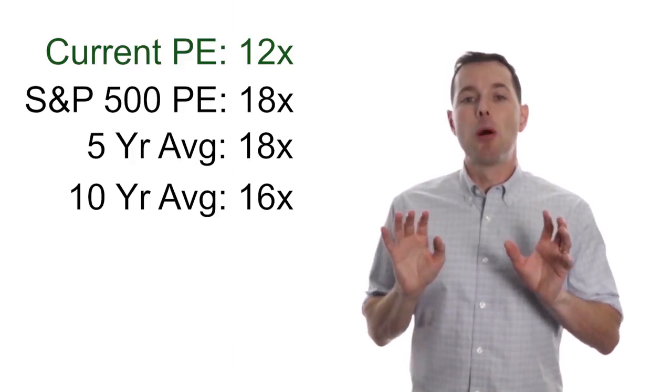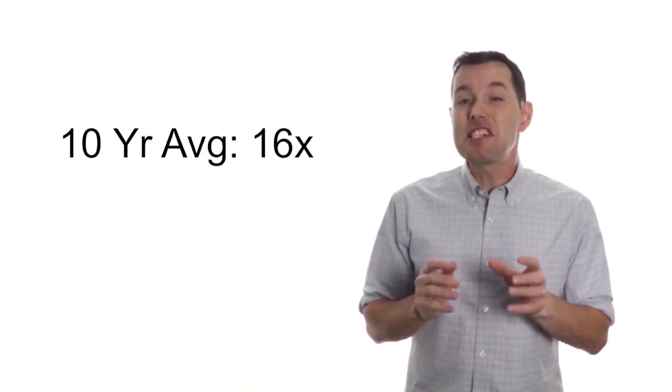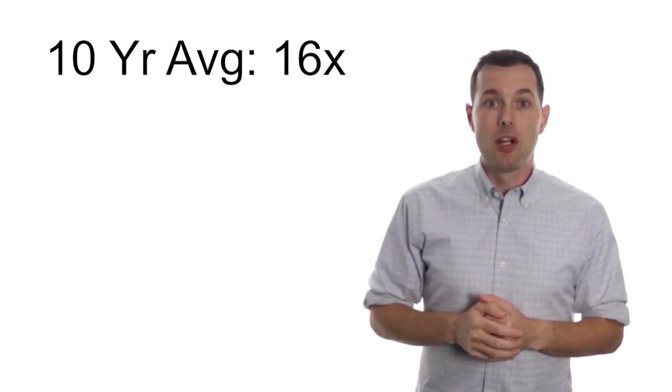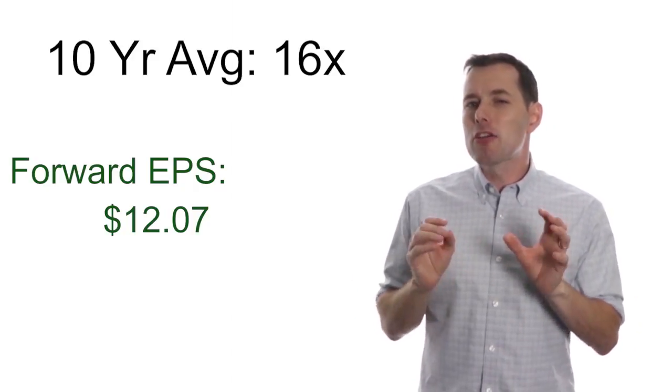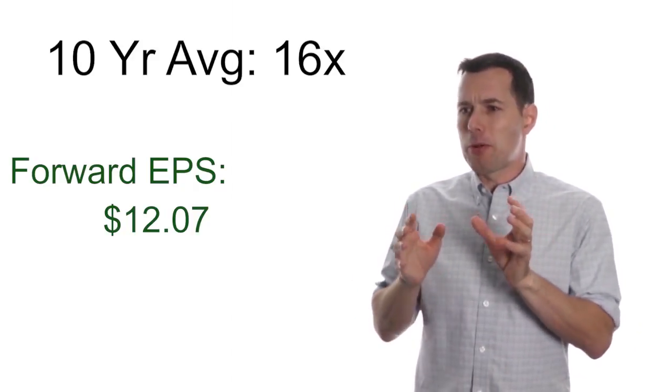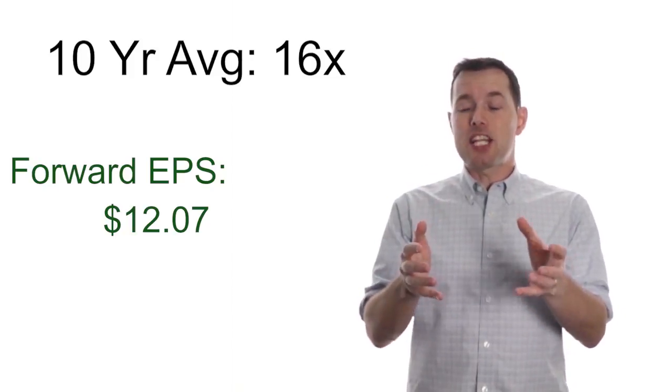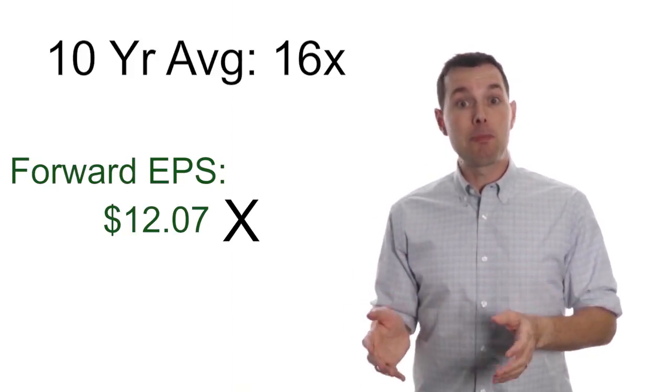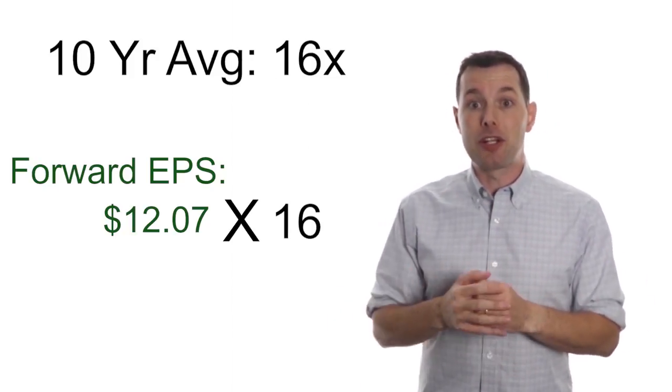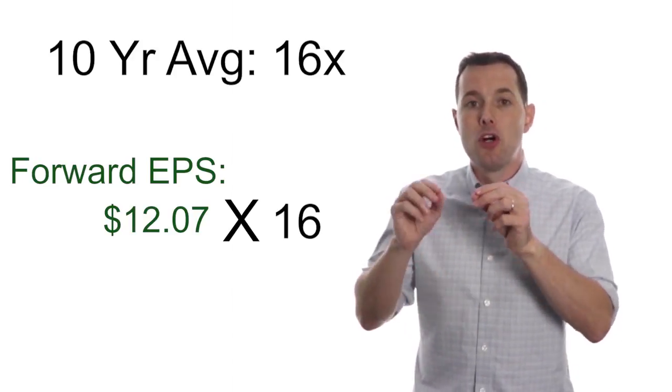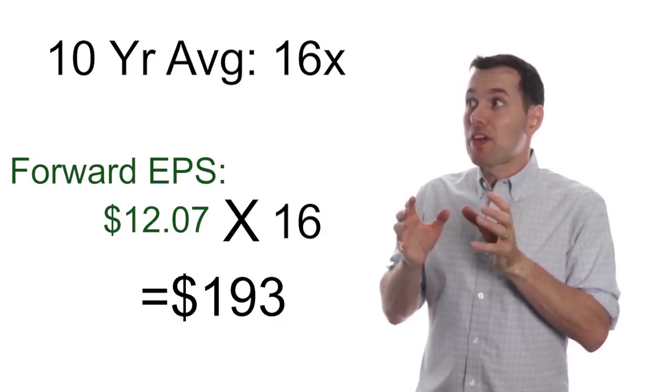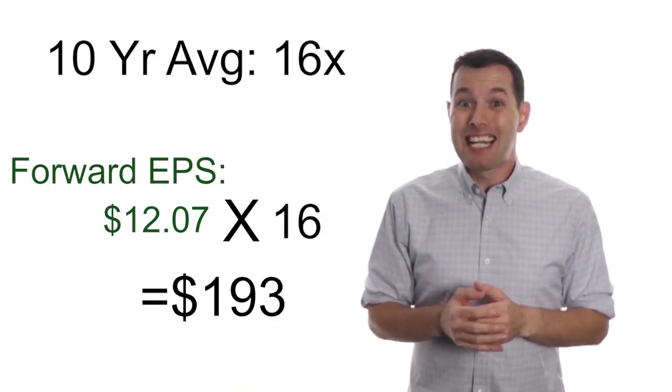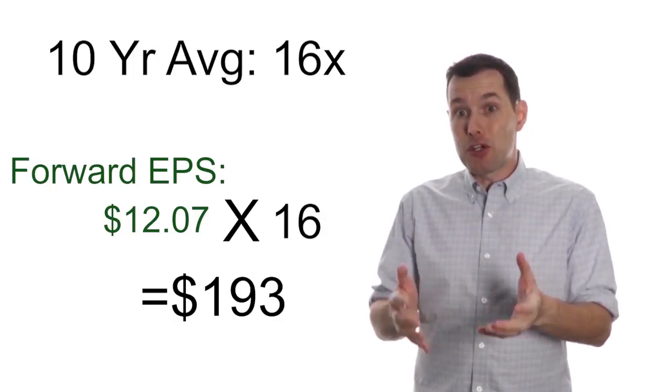Okay, so out of those numbers let's take the most conservative number and use 16 times forward earnings. EPS estimates for the next four quarters are a hair over $12 a share. I think it was actually about $12.07. So if we take that $12.07 and multiply it by 16 times next year earnings, that would imply that the fair value right now is about $193 a share. Once again, with the current share price of about $150, Caterpillar looks like it's a pretty good value right now.